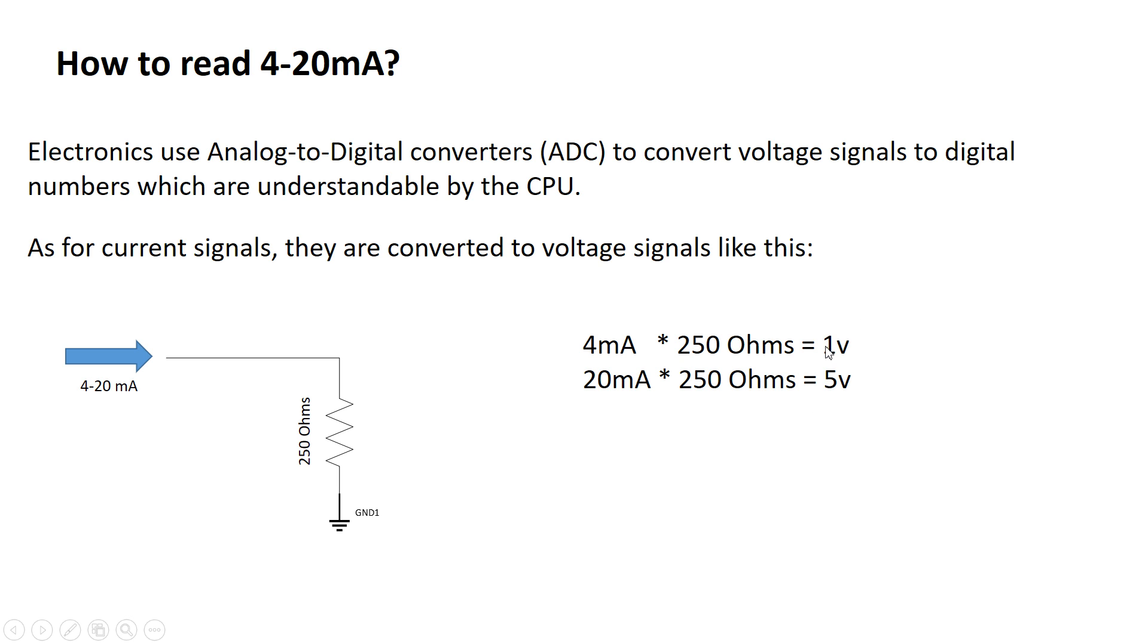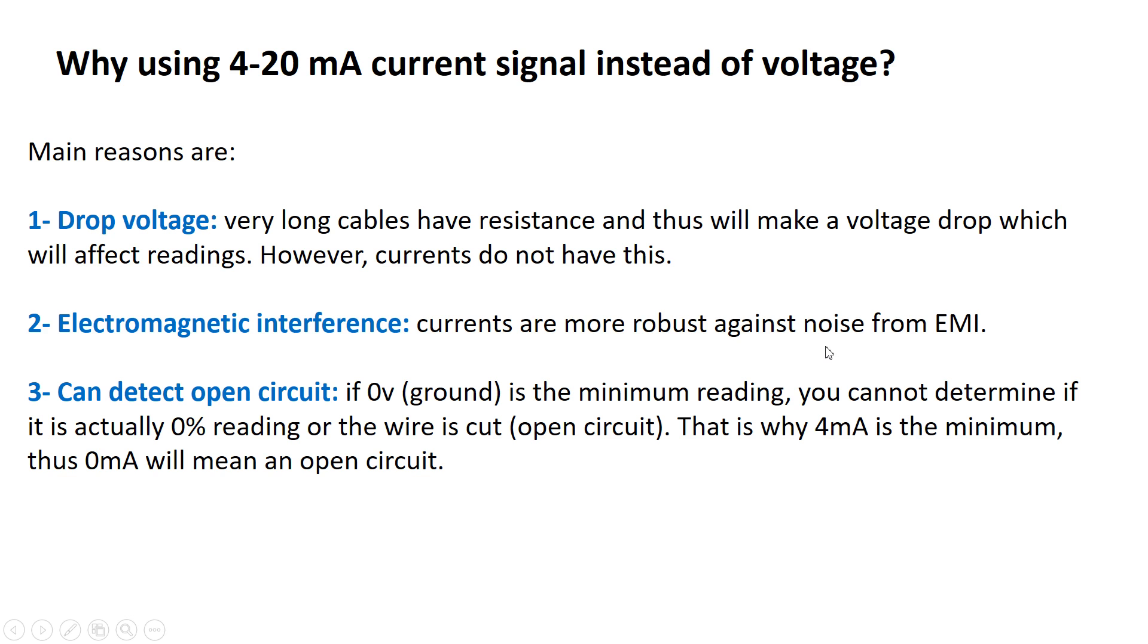Now why do we use the 4 to 20 milliamp current signal instead of voltage? The main reasons are: first, voltage drop. For very long cables, which are the standard in industry or any plant, these have resistances in them and this will make a voltage drop in the wire before the signal goes into the measuring device. It will be changed. However, currents do not have this issue.